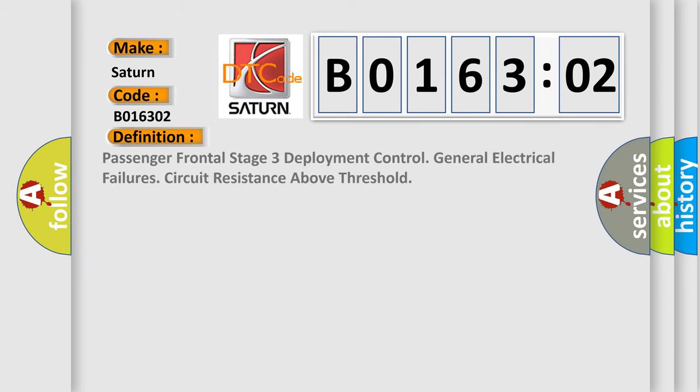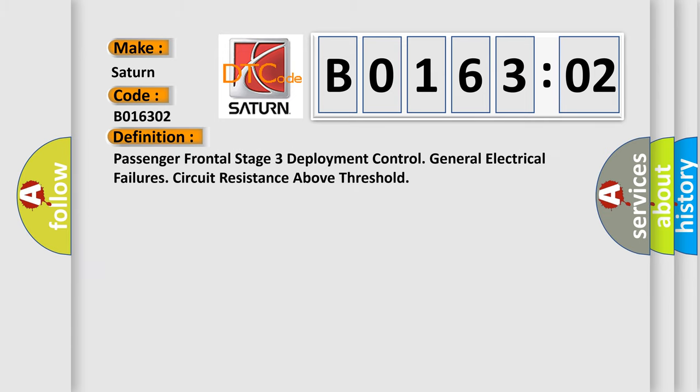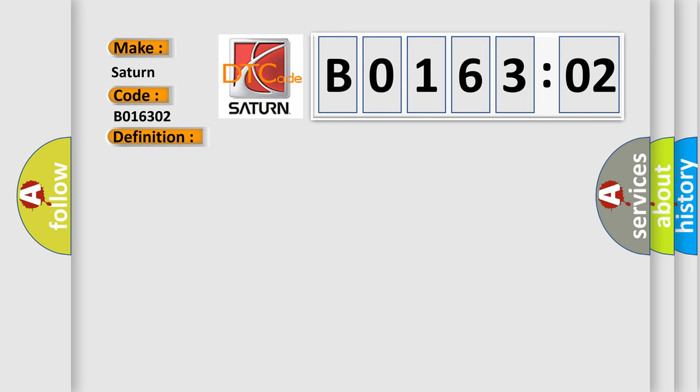The basic definition is: Passenger Frontal Stage 3 Deployment Control General Electrical Failures Circuit Resistance Above Threshold. And now this is a short description of this DTC code.